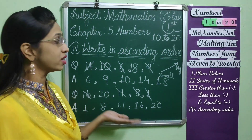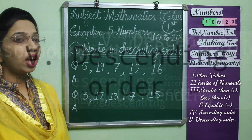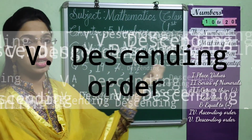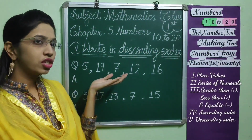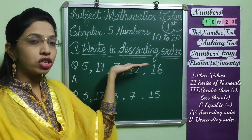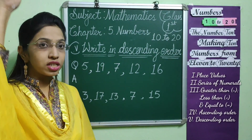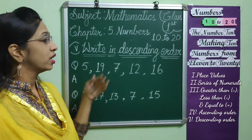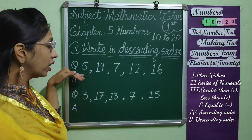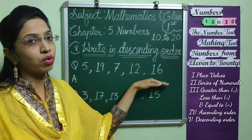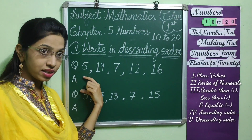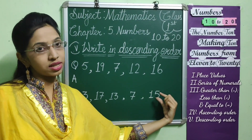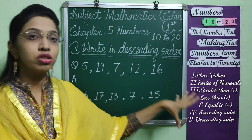Now, we will move on to the next topic, the 5th — write in descending order. Descending order means ordering of numbers from greatest to smallest. We have to arrange — first the greatest number, then little small, small, small, smallest — means big to small.